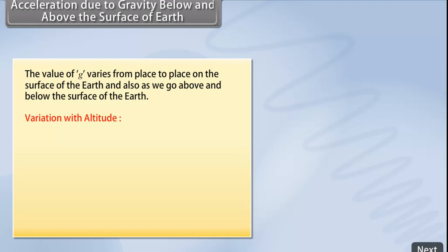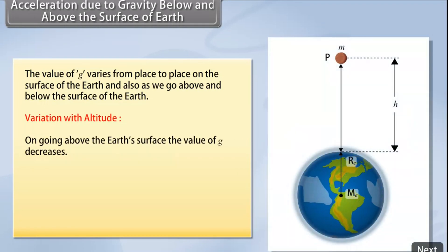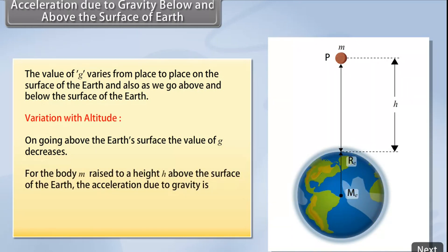Variation with altitude: On going above the earth's surface, the value of G decreases. For the body M raised to a height H above the surface of the earth, the acceleration due to gravity is given by G prime is equal to G multiply by 1 minus 2H upon R.